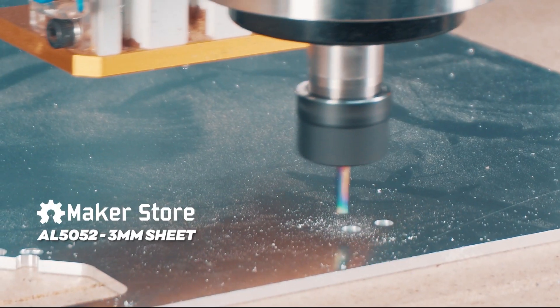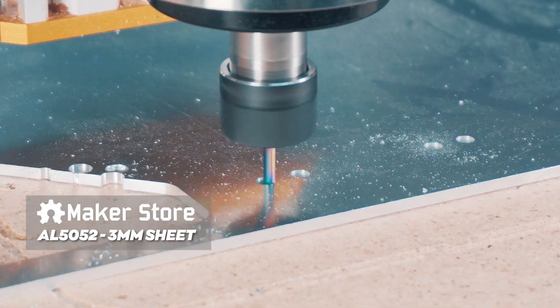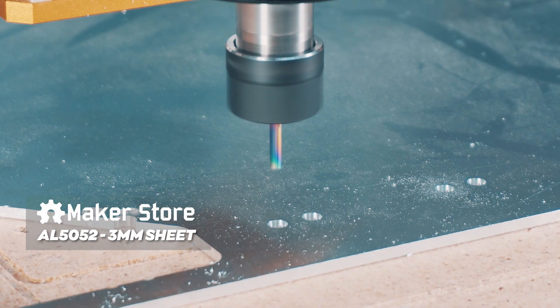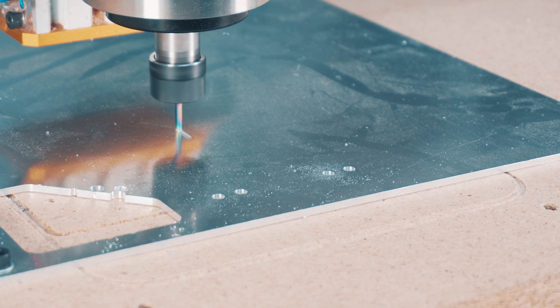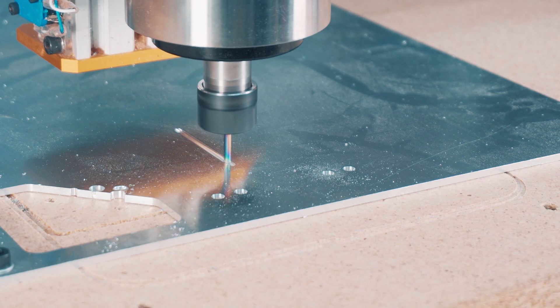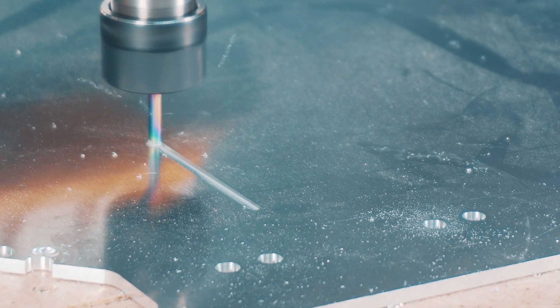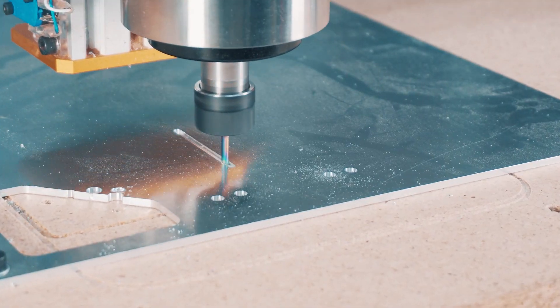We are using aluminum 5052, 3mm thick sheet that is available at Maker Store to mill out this part. We have designed the part in such a way that it has chamfers on the sides to protect the user from sharp cuts, and slots at the top and mounting holes at the bottom.